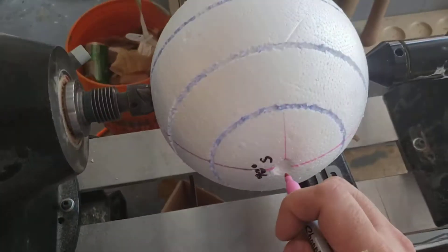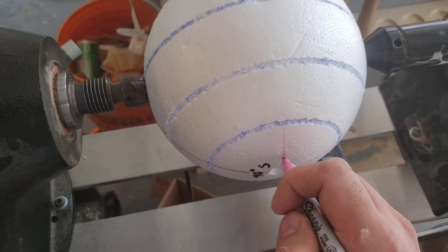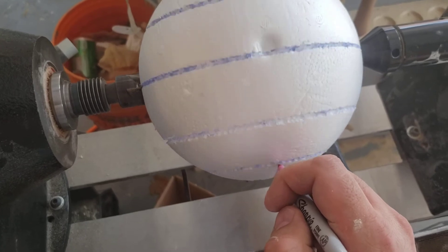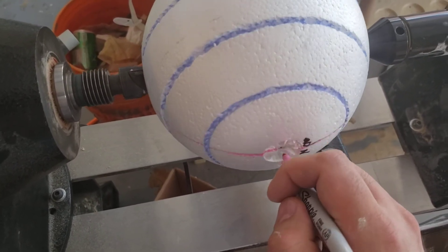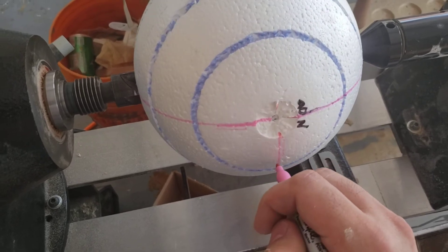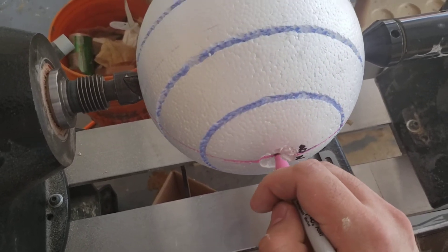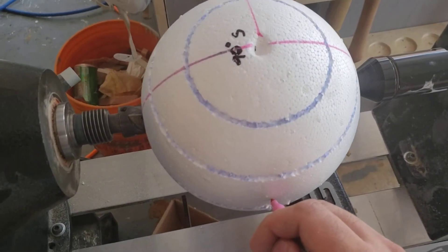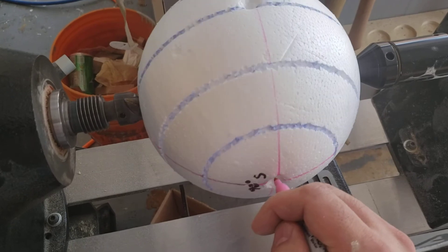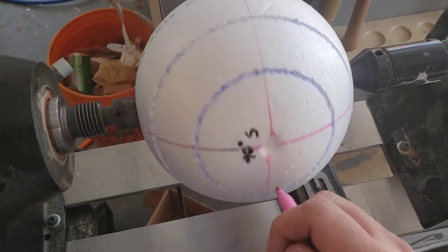All right, here we go. We're going to draw another one 90 degrees from the other meridian that we just drew. That worked well - it lined up right with the North Pole and keeps going. Sorry, it's hard to video and hold this and do this all at the same time.